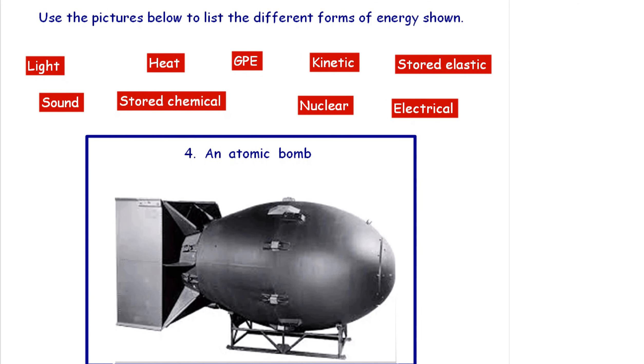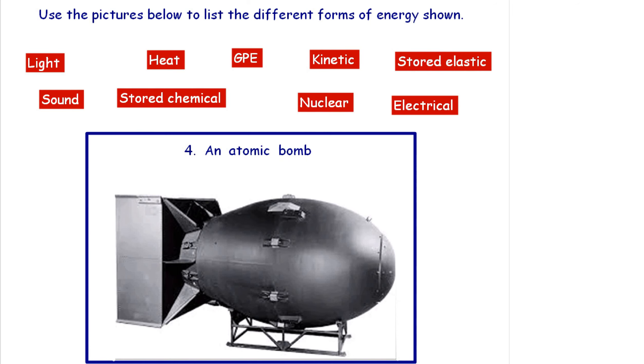Picture four, an atomic bomb. Made of metal and other substances as well, so there's definitely stored chemical in there, certainly a lot of stored nuclear energy. It's yet to be dropped so it's stationary at the moment, so kinetic no. Will there be electrical wires in this bomb? Probably, so possibly that. So they're the first four.